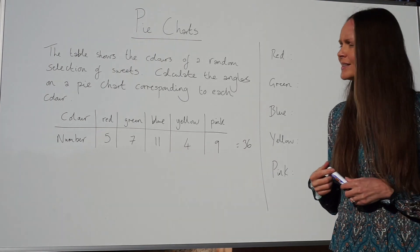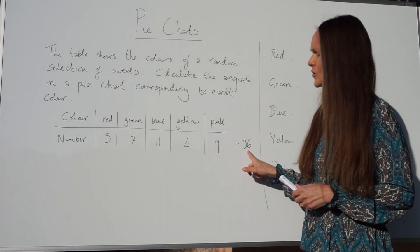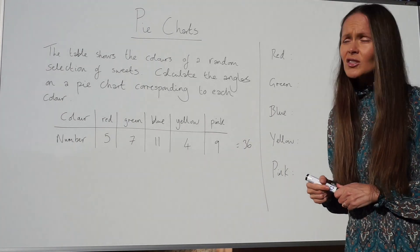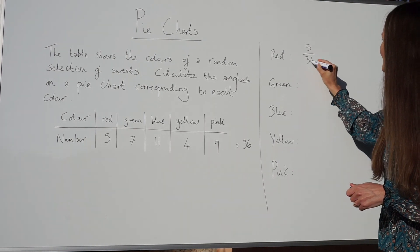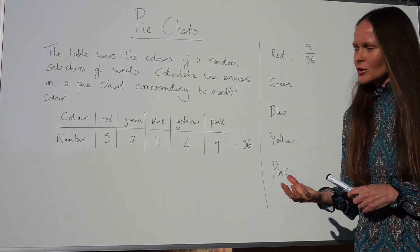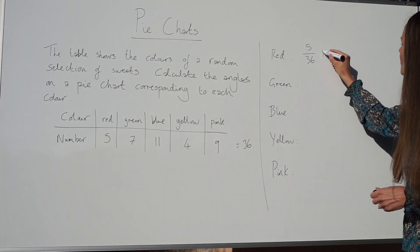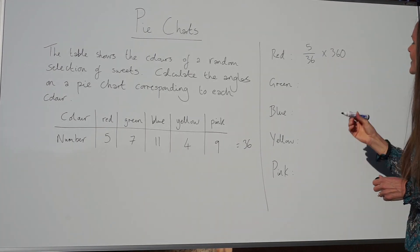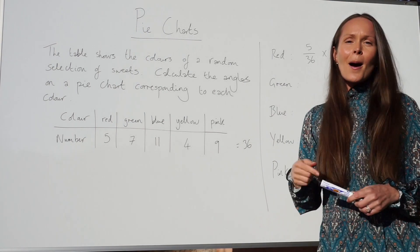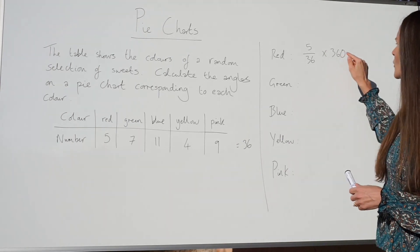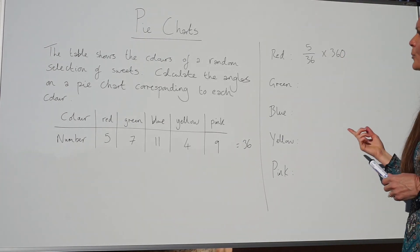Now that we've got the total, we can find the fraction of red sweets. Because there are five red sweets and a total of 36, the fraction of red sweets is five out of 36. Now that we've got the fraction, we can turn it into degrees. To do that, you must multiply by 360 because in a full circle you have 360 degrees, and pie charts are always circles, so you always multiply by 360.